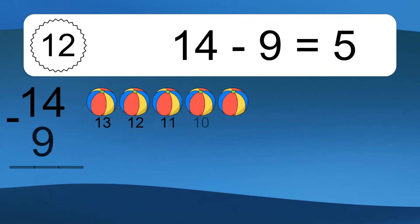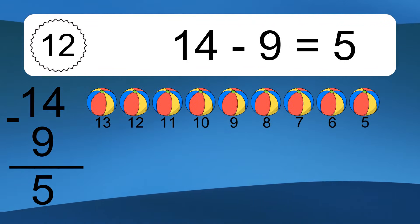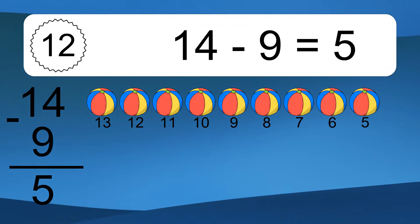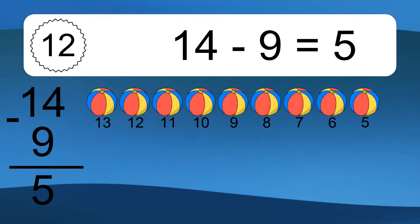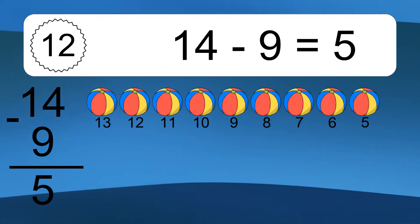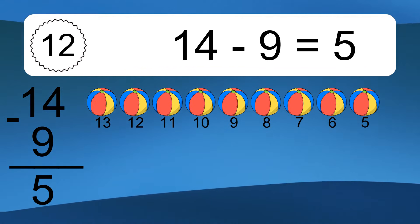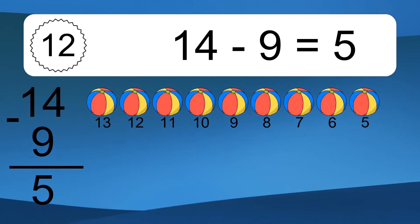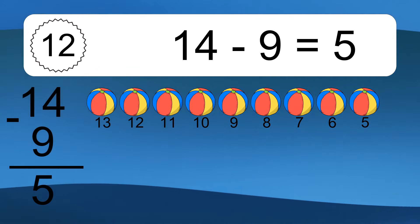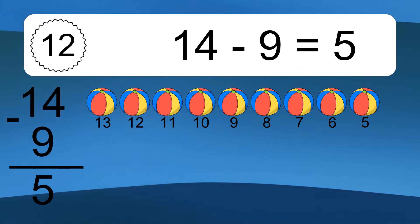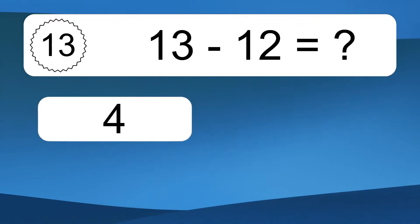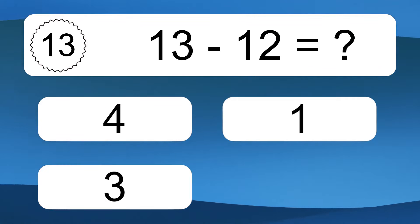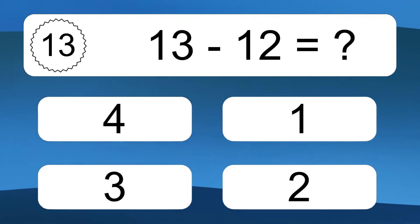14 minus 9 equals 5. Let's count it: 13, 12, 11, 10, 9, 8, 7, 6, 5. 13 minus 12 equals what?